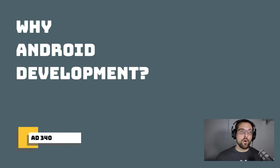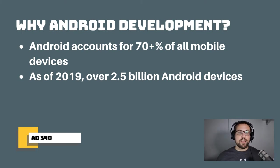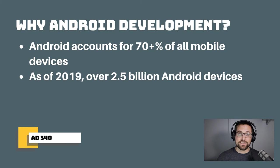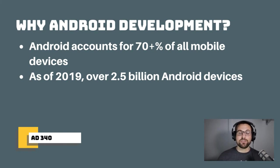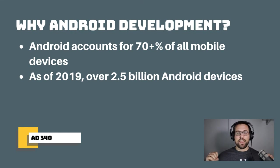So why are we going to choose native Android development? Android devices account for over 70% of all mobile devices in the world — something like 72%. As of 2019, Google announced at Google I/O that there were over 2.5 billion Android devices in the world, and we're another year removed from that, so that number has certainly gone up. Android is just a huge market share with so many devices.